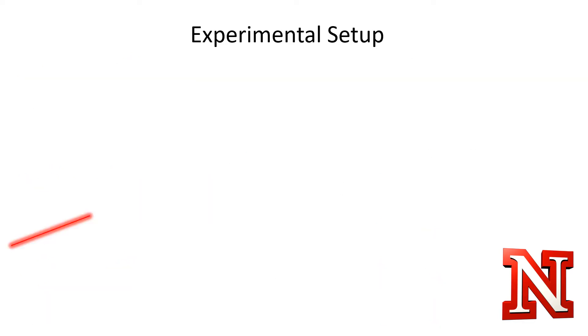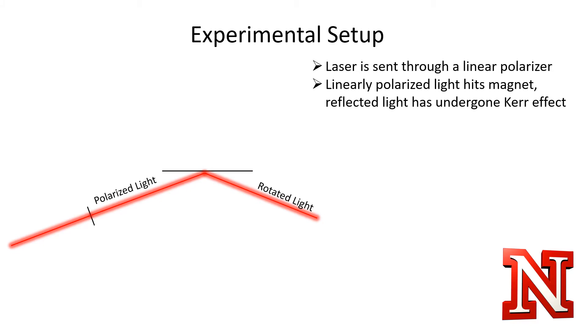Since the Kerr effect is proportional to magnetization, it is often used to gauge the magnetization of materials like thin films. In order to do this, a laser is sent through a linear polarizer towards the magnetic material, and the light undergoes the Kerr effect when it reflects off the magnet.